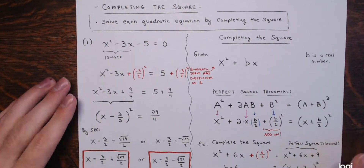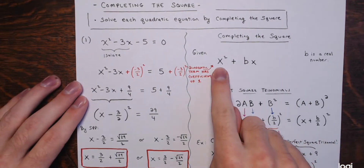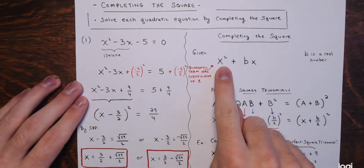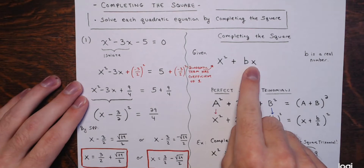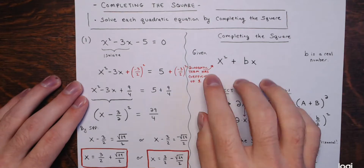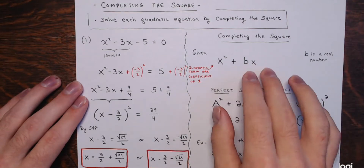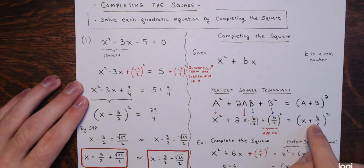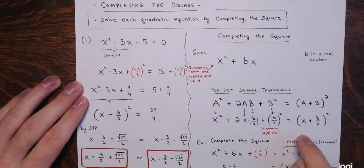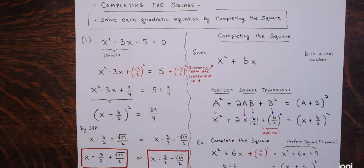I'll follow the same steps for every example: get the quadratic and linear terms on one side, make sure the quadratic term has a coefficient of 1, then complete the square by adding (b/2)² to both sides, write the perfect square trinomial as (x + b/2)², use the square root property, solve, and check.